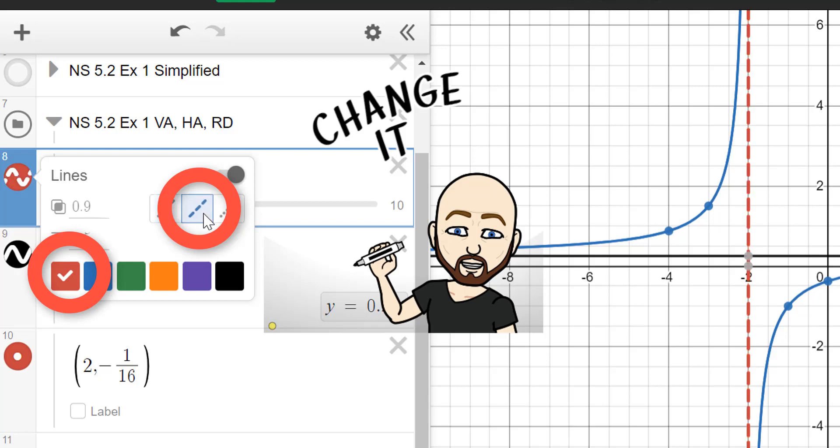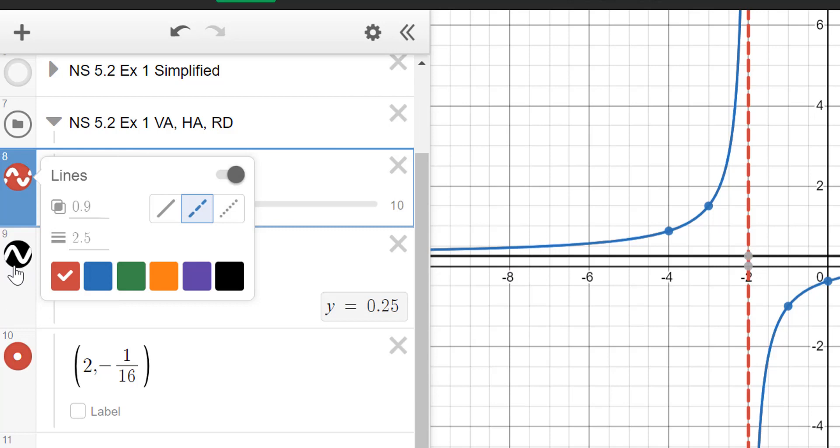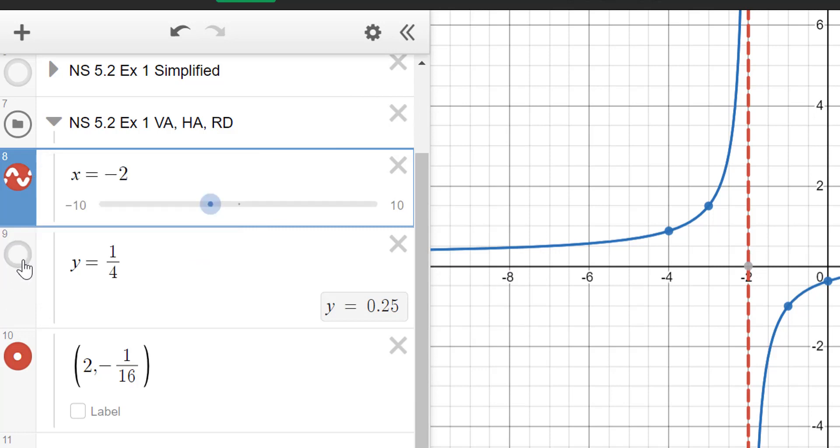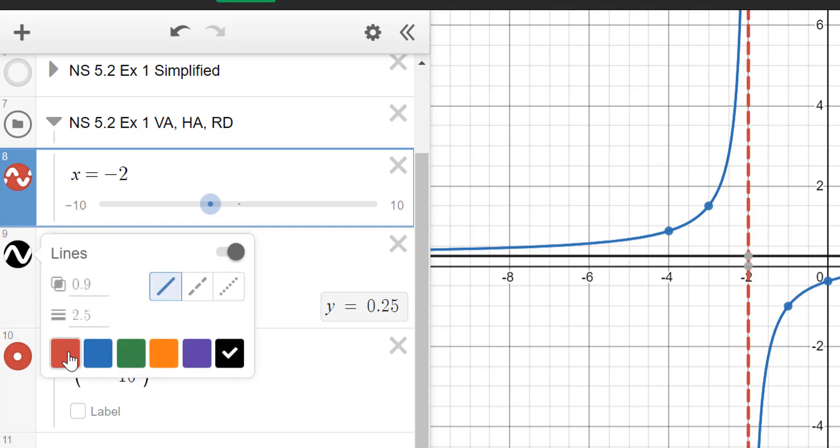So those are going to be the two things that you're going to do for any horizontal or vertical asymptote. You're going to make it red and a dashed line. Similarly, we'll go to our next one. And notice sometimes it'll turn off. And if you do that, it won't allow you to do anything. So you have to make sure that the color is showing there in order to change color. So we're going to make this one red and dashed.